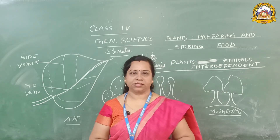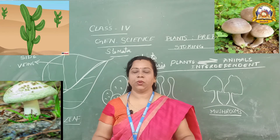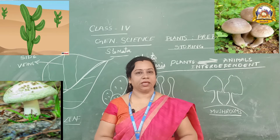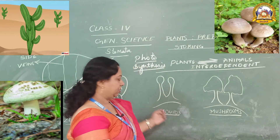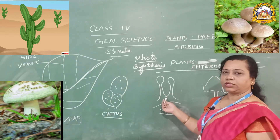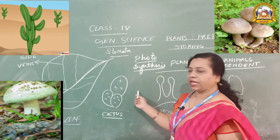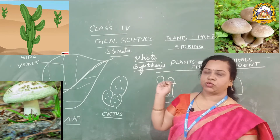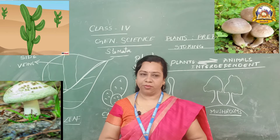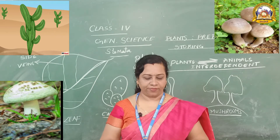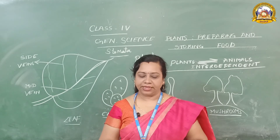Some unusual plants: as the name suggests, some plants are not usual. They are not green in colour. Example: cactus. The cactus has spines, and its stem can make its own food. Then moulds and mushrooms are white in colour. They can make their food because of dead and decaying matter. So moulds and mushrooms can make their food with the help of dead and decaying matter.